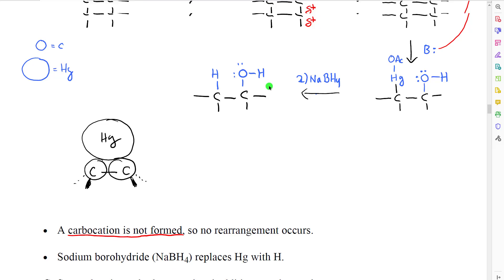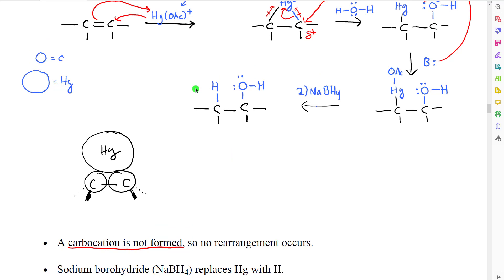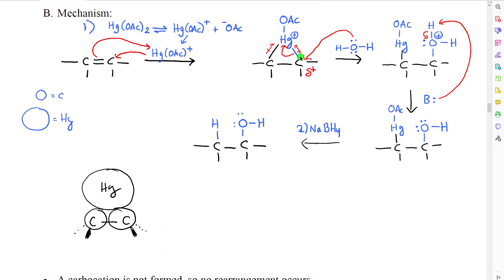One of the important things about this reaction is that if we look, we go straight from the alkene to the cyclic mercury without ever forming a carbocation. Therefore, there is no possibility of rearrangement in this reaction.